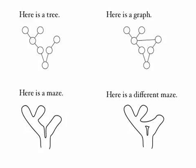Beneath the tree and the graph are a maze and a different maze. The maze on the left corresponds to the tree on the left, the maze on the right has a cycle and corresponds to the graph on the right.